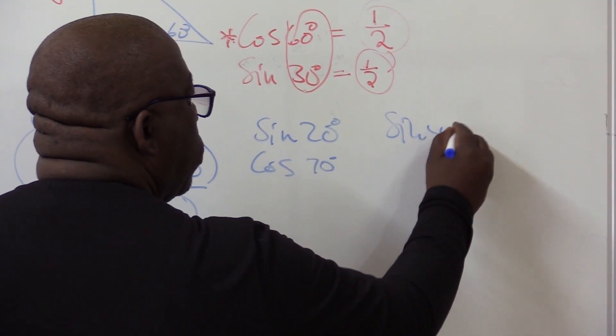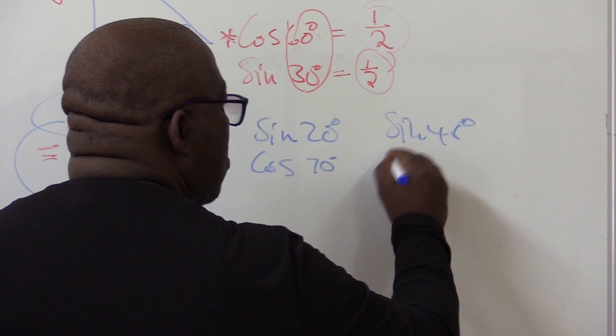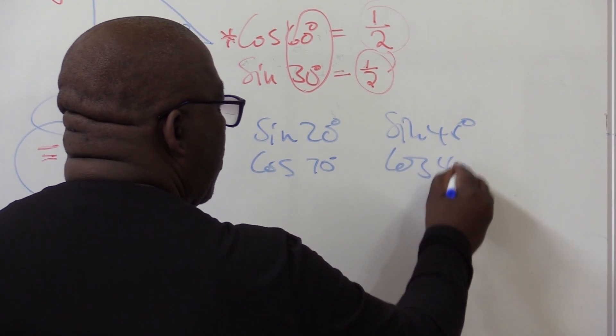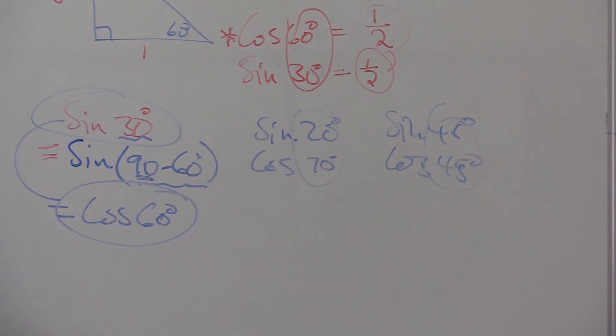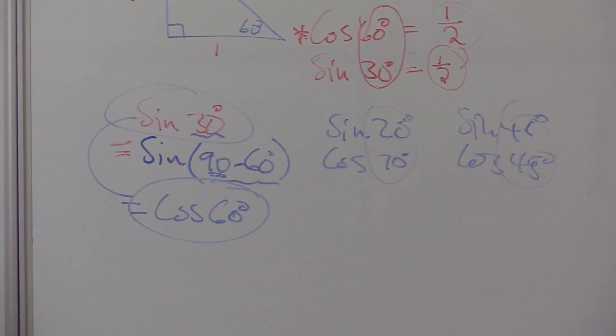Cosine 45 is the same as sine 45. As long as when you add these two you get 90, those will be the same. The ratios are different. We are dealing with sin and cos.